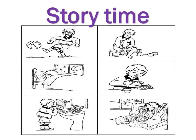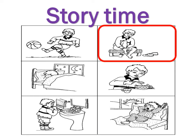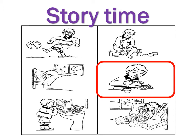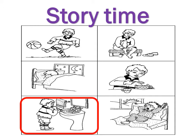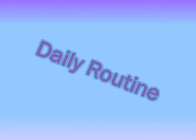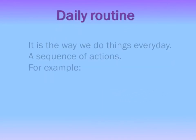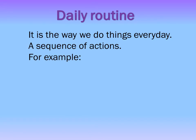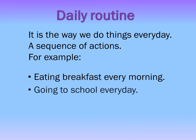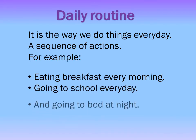Let's do story time. Let's quickly look at these pictures. It's a boy playing outside. Then there's someone putting on some shoes. He's asleep in bed. Eating breakfast with some coffee. Brushing his teeth. And waking up in the morning. Now if you look at these pictures, what do you think of? You think of your daily routine, which is the way we do things every day — a sequence of actions, like eating your breakfast every morning, going to school every day, and going to bed at night.